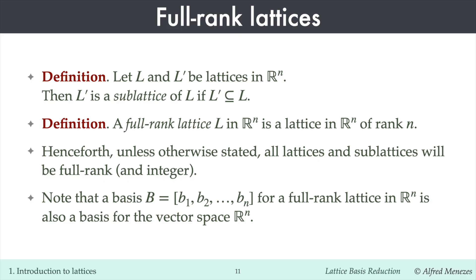The key distinction lies in the type of linear combinations. As a lattice basis, the set of all integer linear combinations of the basis vectors produces all the lattice elements. On the other hand, as a vector space basis, the set of all real linear combinations of the basis vectors generates the entire space R^n.